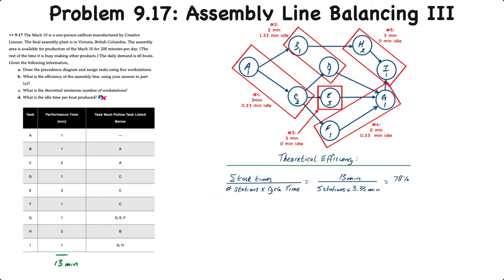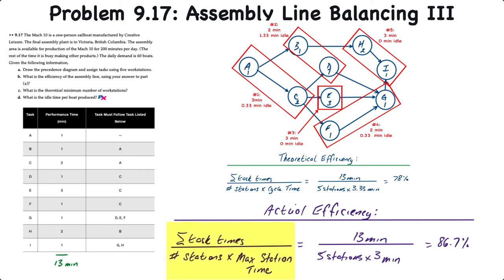Actual efficiency is a variation of that formula. It uses the sum of the task times divided by the number of actual workstations, but instead of multiplying by the cycle time, we multiply by the maximum station time — simply the highest workstation time in our balanced assembly line. The sum of the tasks is still 13 minutes, with five workstations, and the longest workstation time is three minutes. So 13 divided by five times three gives us 86.7% efficiency.